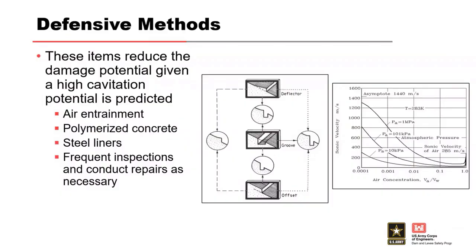Air is the primary defense measure because it drops the sonic velocity of the water and cushions it. We typically do that at the upper end of chutes with air ramps — we want the air at the invert. It may take too long if we rely on self-aeration, and we can get upper-chute cavitation damage in that case.